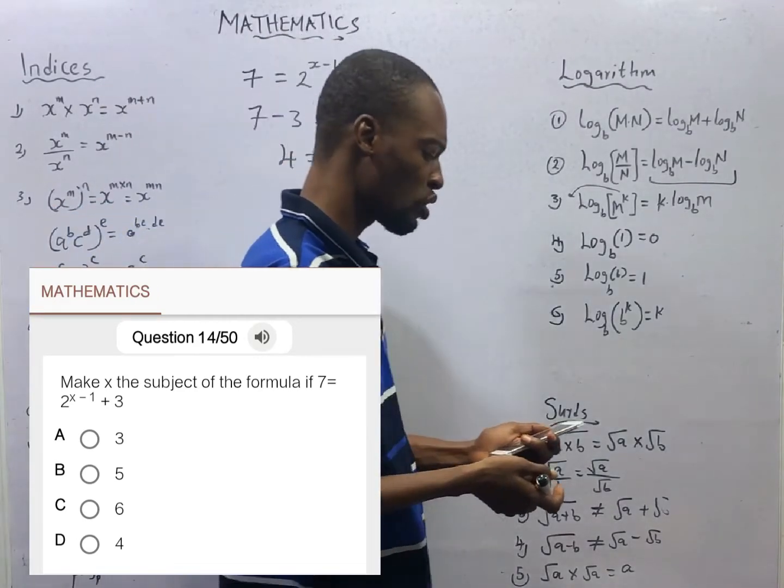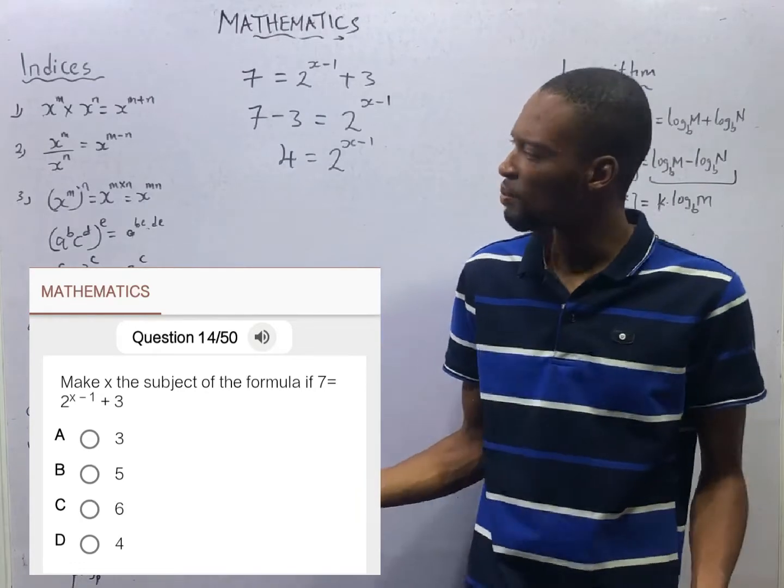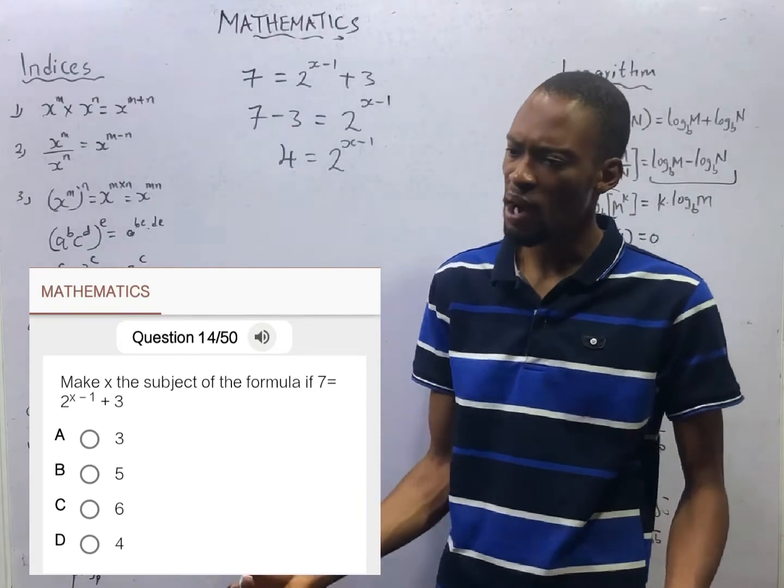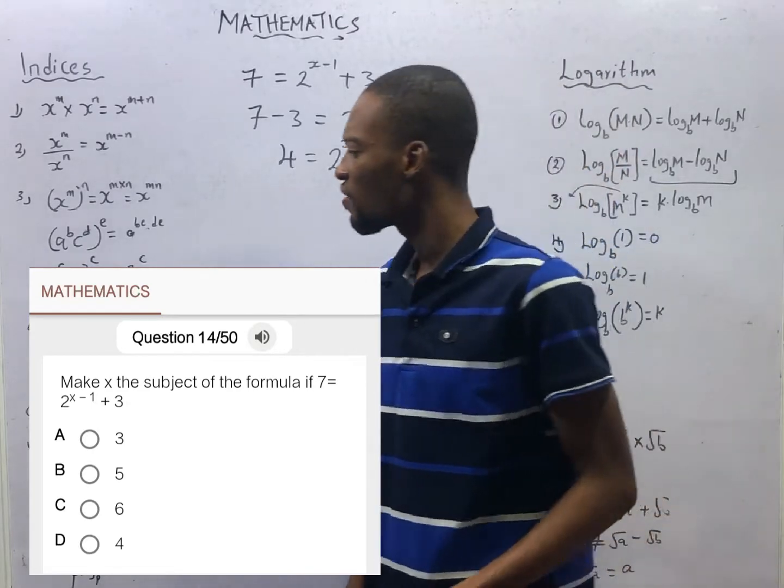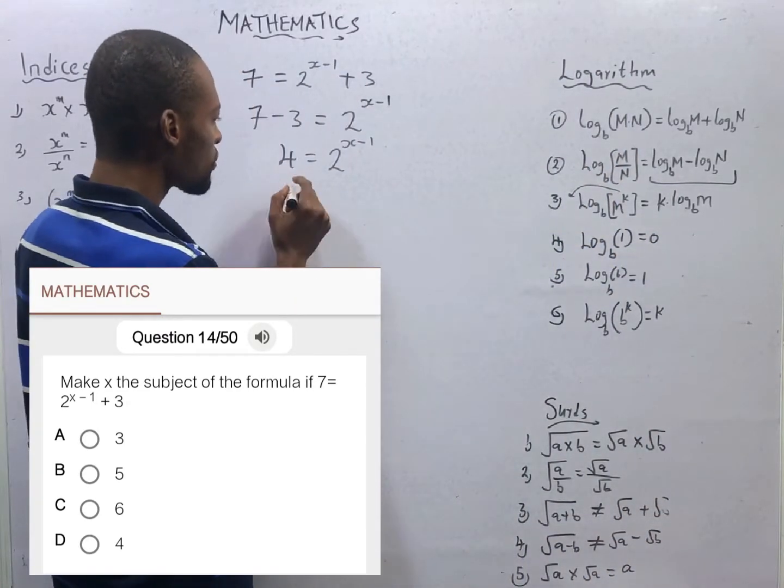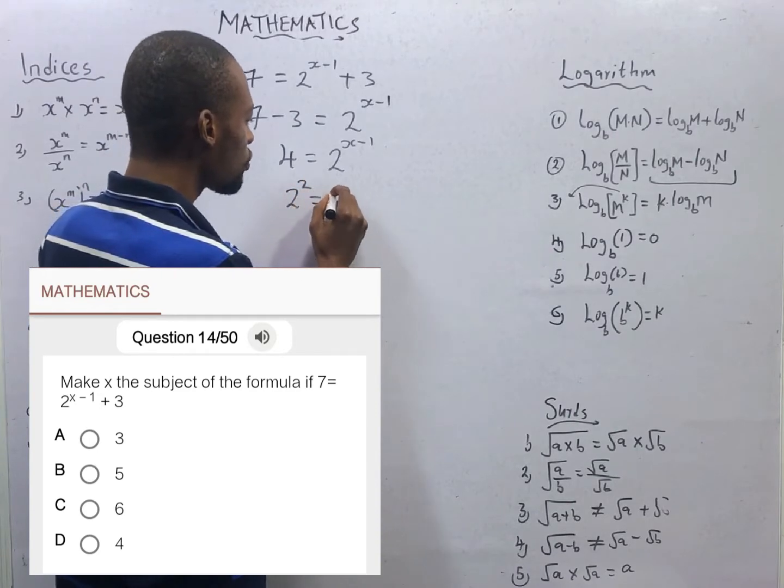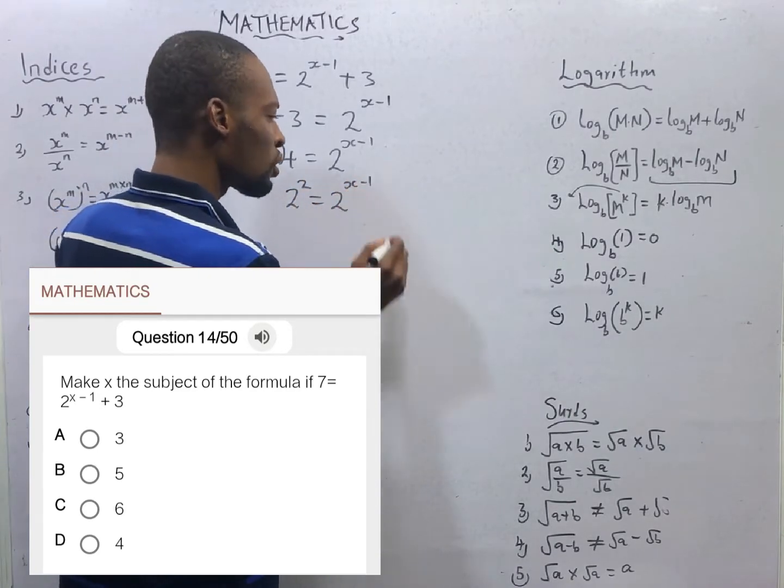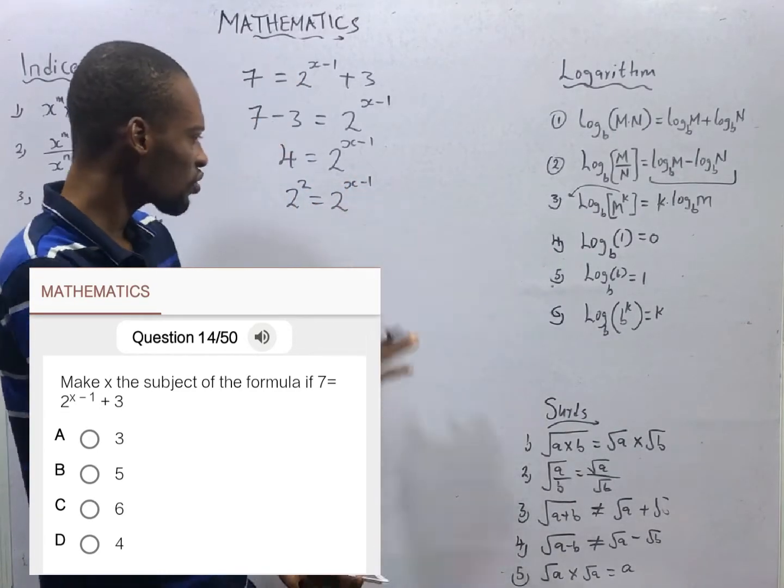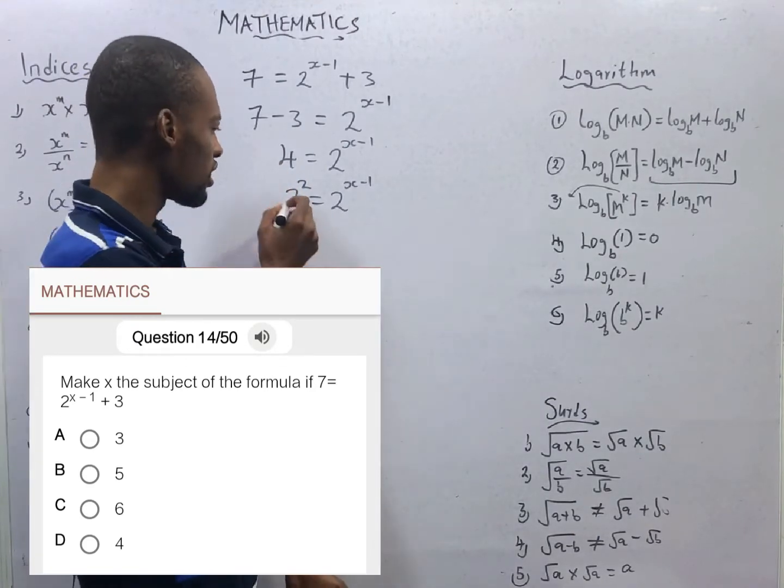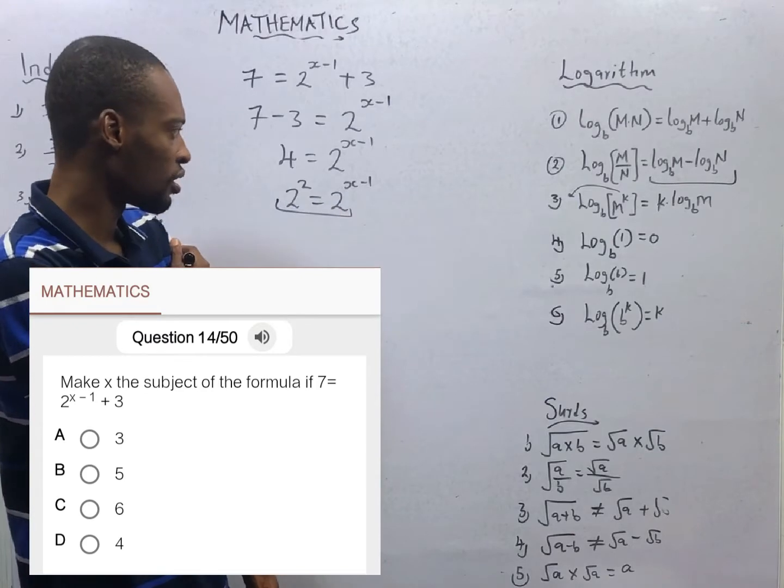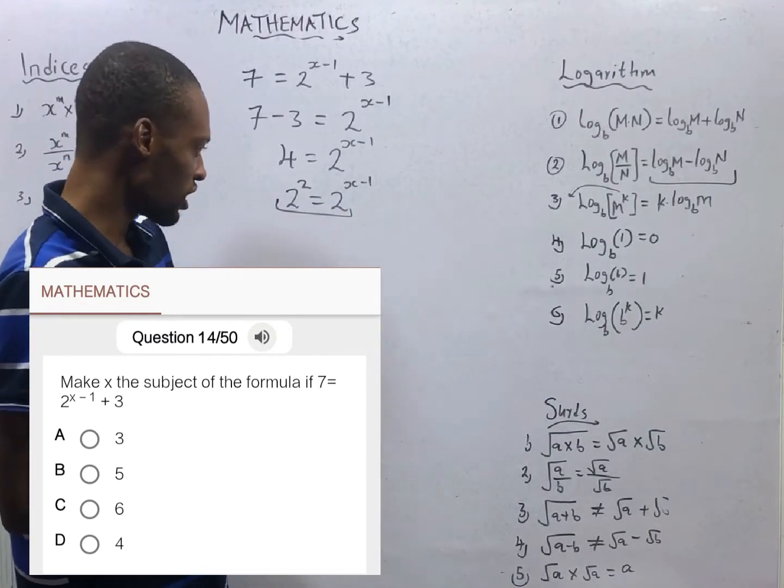In indices, we try to make the base the same so that we can equate the same so that operations can be easy for us. If we do that, this becomes 2 raised to the power of 2 is equal to 2 raised to the power of s minus 1. Because 4 is the same thing as 2 raised to the power of 2. Now the bases are the same. It therefore means that the power can be equated.